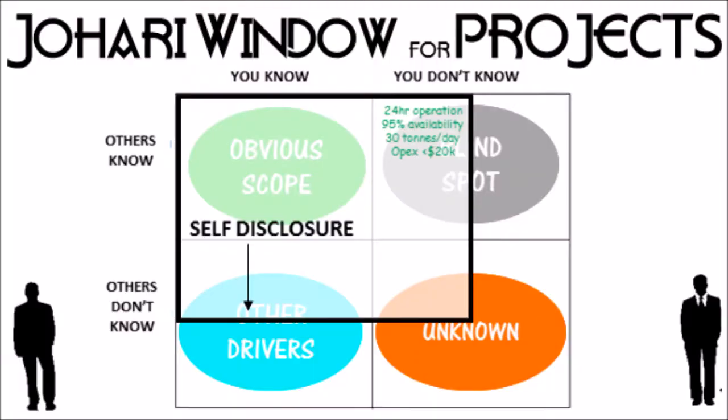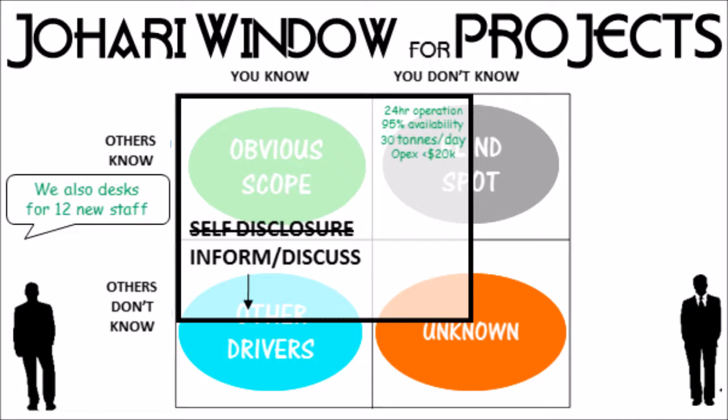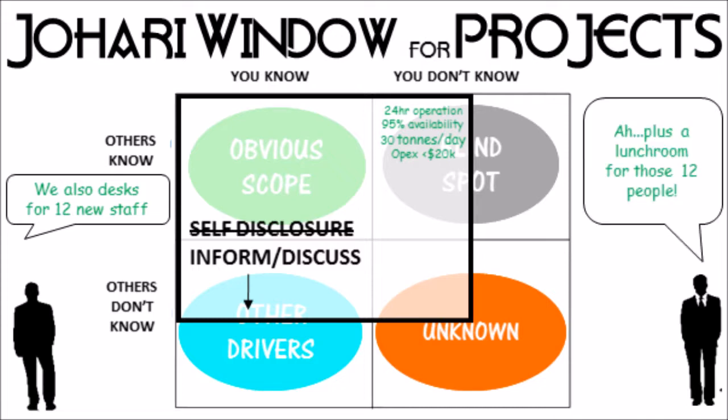The second thing we talked about was self-disclosure. In the original example it was making the things you wanted known about yourself clear so others could respond accordingly. In the case of a project, this is about explaining to people what you see the scope of the project to be and giving them the opportunity to pass judgment, correct you if you're wrong, or add to it.